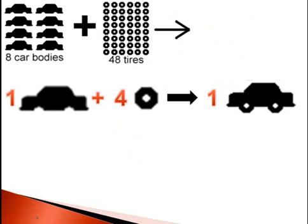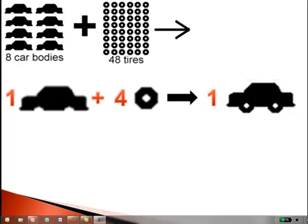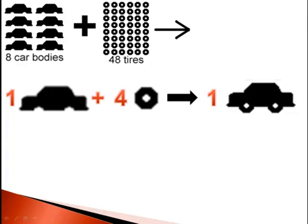Let's take a look at an example. If we have 8 car bodies and 48 tires, and we know that in order to make a car we need 1 car body plus 4 tires, that will then give us 1 car.